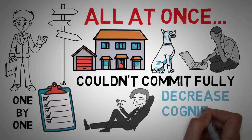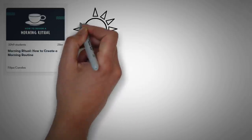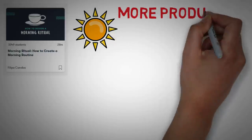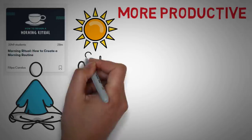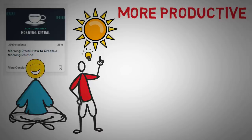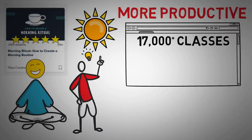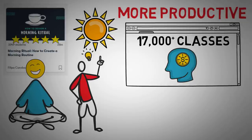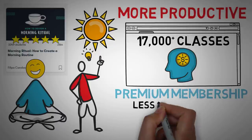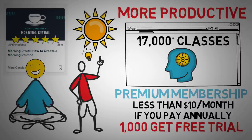If you're interested in learning how to decrease your cognitive load, one of the best ways is to come up with a morning routine. I recently took a course on Skillshare titled Morning Rituals: How to Create a Morning Routine. It outlines important routines I found very helpful in making my mornings much more productive. Something new I added was practicing gratitude — it's been affecting my daily mood. With over 3,000 students in the course, I highly recommend it. Skillshare sponsored this video; they're an online learning platform with over 17,000 classes, and a premium membership costs less than $10 per month if you pay annually. The first 1,000 people to click the link in the description will get a free trial of Skillshare Premium.